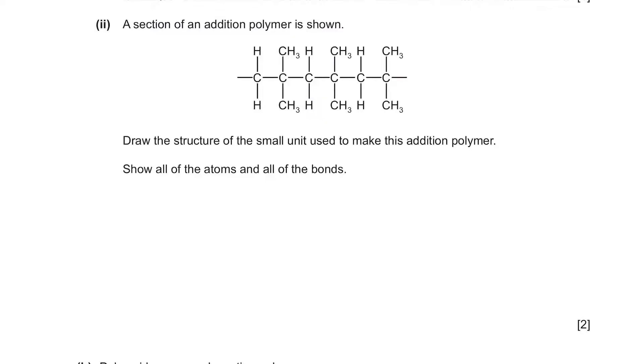So to draw the monomer, we need to see the pattern of this polymer. And we can see one pattern. This is repeated three times in this polymer. So this is one of the main patterns of the monomer that we're going to draw. And since it's an addition polymer, it needs to have a C=C bond. So if we draw it, it's going to look like C=C bond, H, H, CH3, CH3. And we're done. It's simple. We just have to identify the pattern and make sure you put in the C=C bond, because it's an addition polymer.